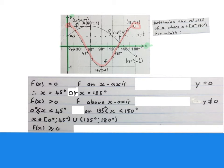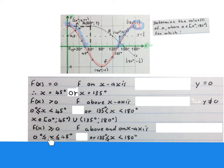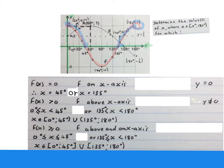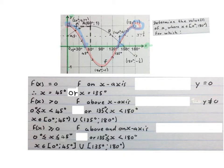The next question asks where is f of x bigger than or equal to 0. It means where is f above and on the x-axis. The answer is x is bigger than or equal to 0 and smaller than or equal to 45 degrees, or x is bigger than or equal to 135 degrees and smaller than 180 degrees. Remember x equals 180 degrees is excluded from our domain so we can never include it in an answer. You can also write the answer in interval notation.